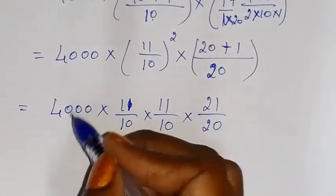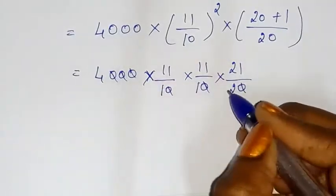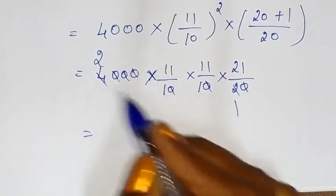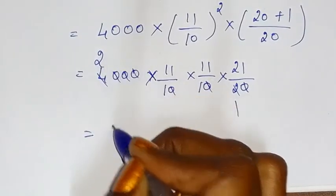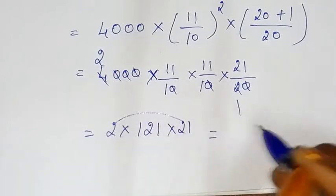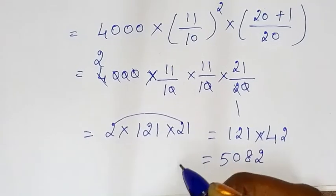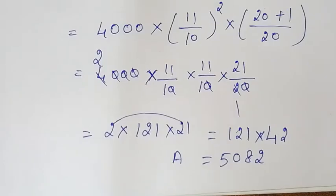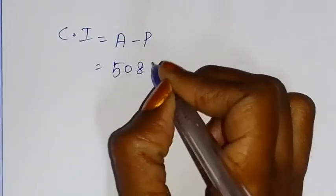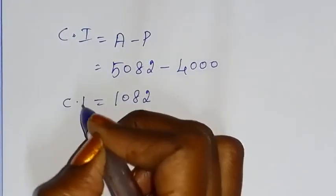After cancelling zeros and multiplying: 4000 into 121 by 100 gives amount equal to 5082. So Compound Interest is equal to Amount minus Principal, that is 5082 minus 4000, which equals Rs.1082. That is the required answer.